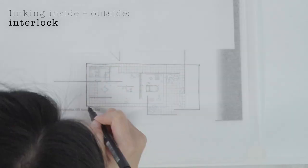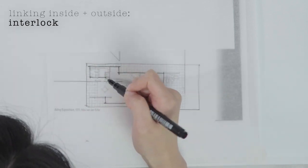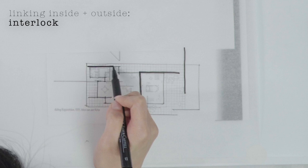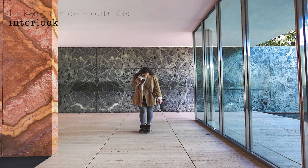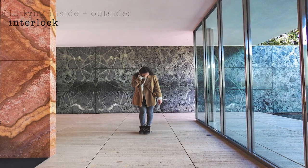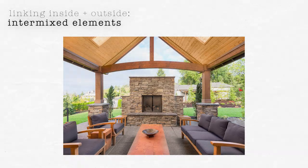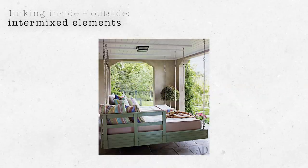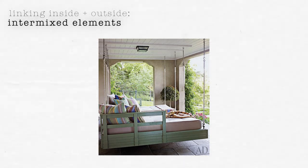Back to the strategies. In the house that Mies van der Rohe designed for the 1931 Berlin exhibition, he blurs the inside and outside by continuing the walls all the way from the inside to the outside, creating a kind of interlocking condition. You can also place unexpected interior elements outside, like locating a fireplace outside or a couch outside.